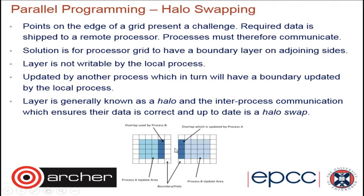The implementation uses boundary layers added to the subgrids along each edge that has a neighboring subgrid. These boundary layers — also called halos — contain the values of points at the edge of the adjoining boundary. They are updated not by the process computing the inner grid points, but by the process handling the adjoining subgrid. These communications go back and forth in what is called halo swapping, done by inter-process communication.